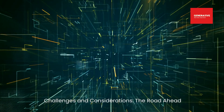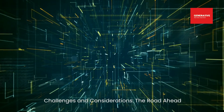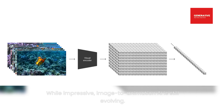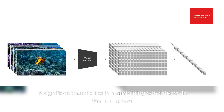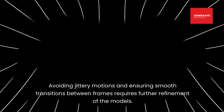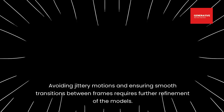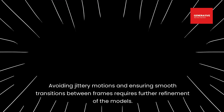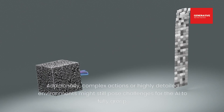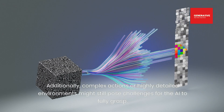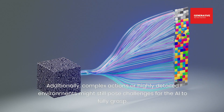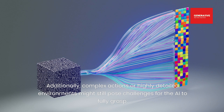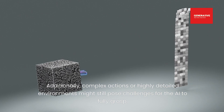Challenges and considerations: the road ahead. While impressive, image-to-animation AI is still evolving. A significant hurdle lies in maintaining consistency in the animation — avoiding jittery motions and ensuring smooth transitions between frames requires further refinement of the models. Additionally, complex actions or highly detailed environments might still pose challenges for the AI to fully grasp.